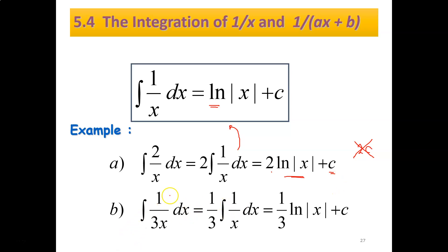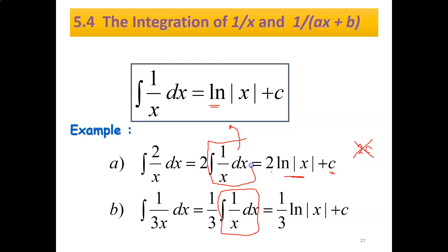Example b: integrate 1 over 3x dx. Your constant here is 1 over 3. Put it at the front. So you get (1/3) times integrate 1 over x dx. Since we've already taken out the constant, the integration of 1 over x is simply ln|x| plus c. So the answer is (1/3) ln|x| plus c.